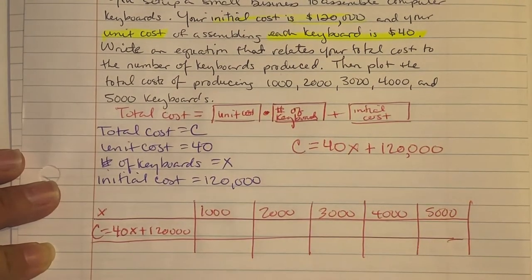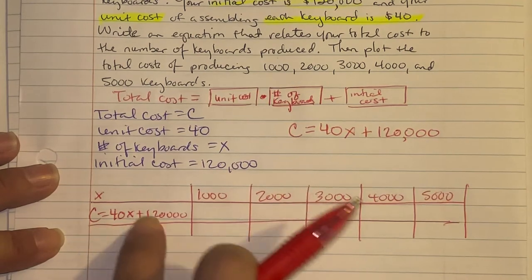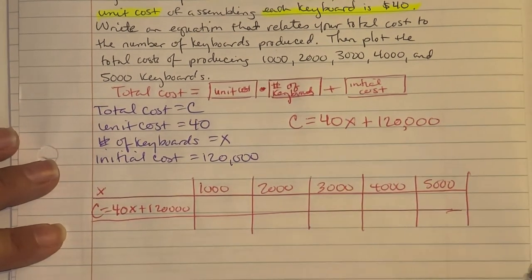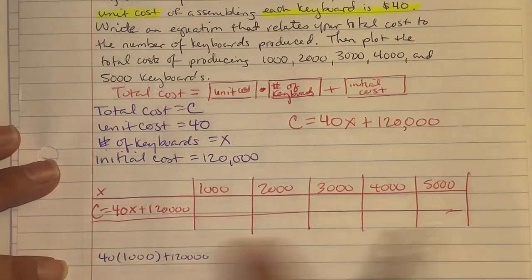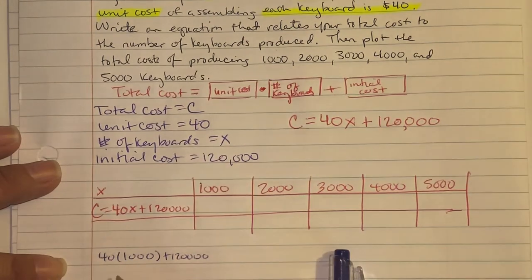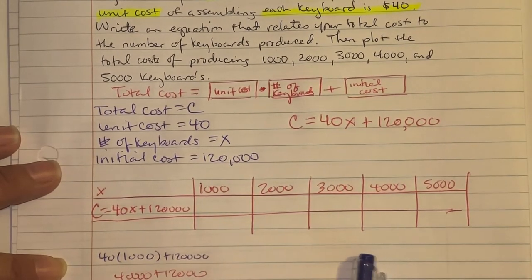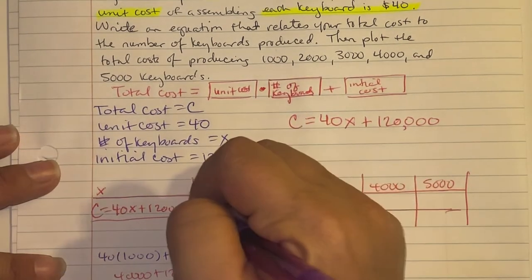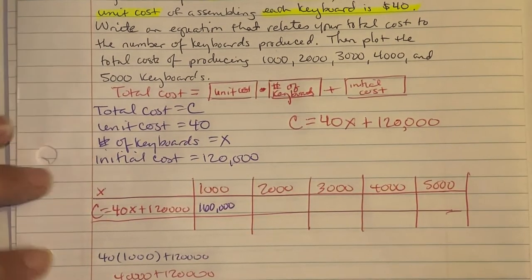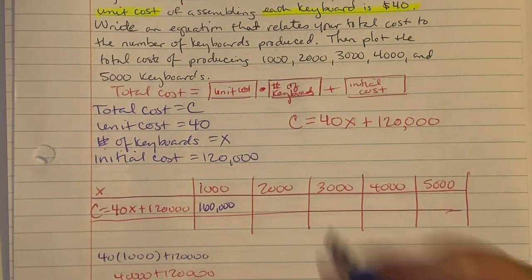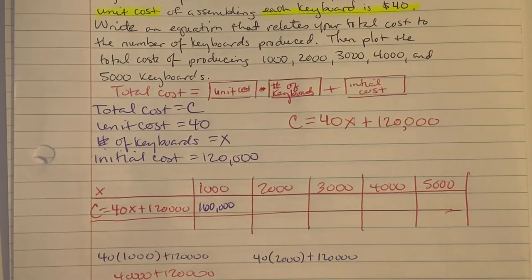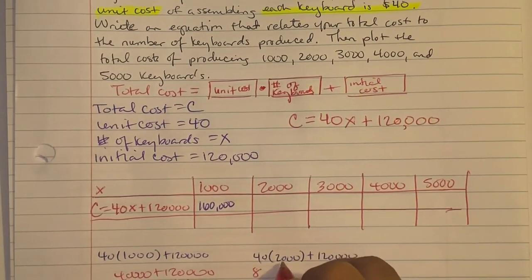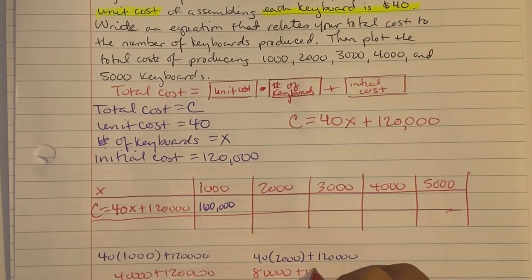For 1,000 keyboards: 40 times 1,000 plus 120,000 equals 40,000 plus 120,000 equals $160,000. For 2,000 keyboards: 40 times 2,000 plus 120,000 equals 80,000 plus 120,000 equals $200,000.